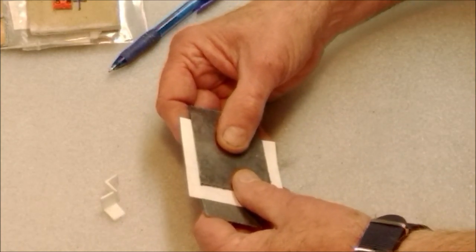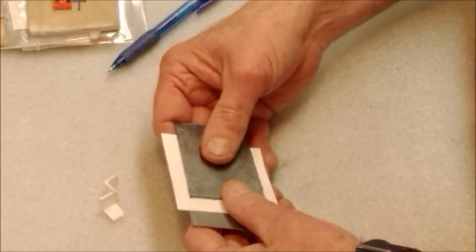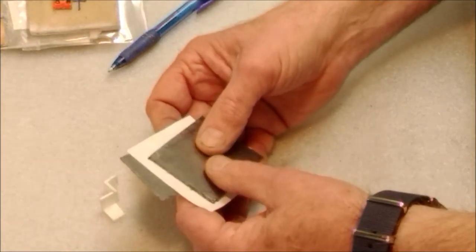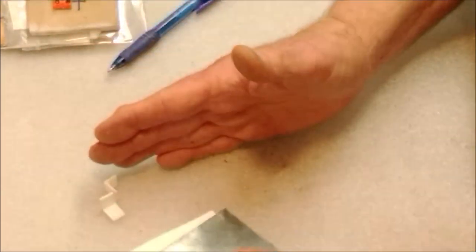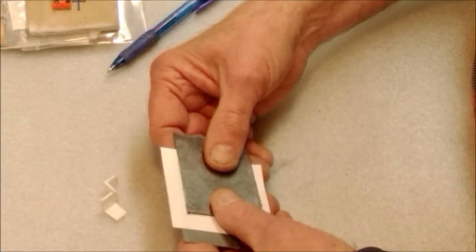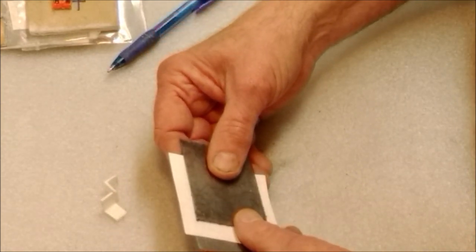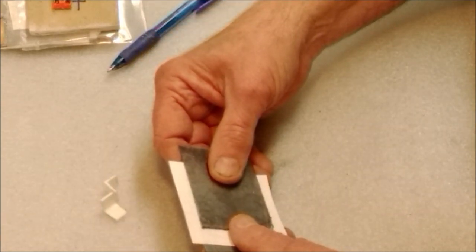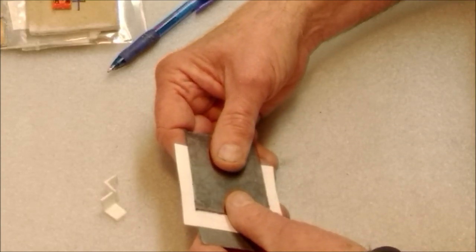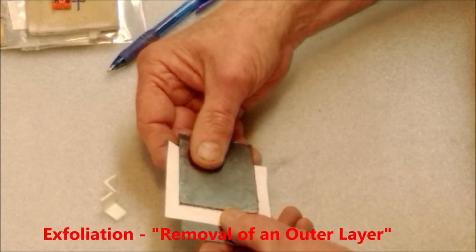So what I want to show you today is how I've taken the graphite foil current collectors and basically in a supercapacitor where you have a layer of current collector, an electrode, a separator, an electrode, and a current collector, I've combined the function of the current collector and the electrode into one by improving on the graphite current collector as its own electrode. We're going to look at two different ways I've done that. Both of them involve exfoliation of the surface of the graphite and you want to do that for a couple reasons.